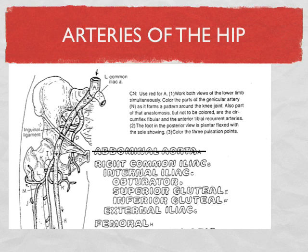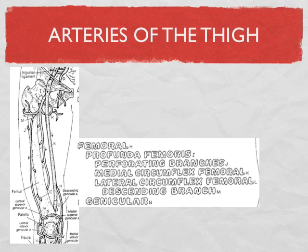You've got the idea of the iliacs branching here in the hip, the gluteals going off to the back, the obturator coming down, and the external iliac going out and becoming the femoral. If you spend an afternoon looking at this and fixing it in your mind, you can move on to the next group. Now let's look at the next group: the femoral or thigh group of arteries.